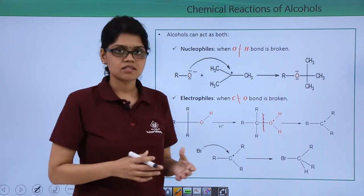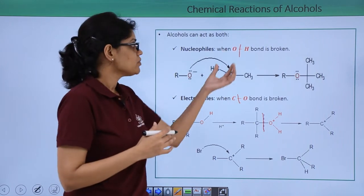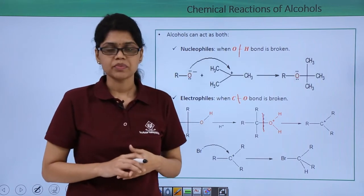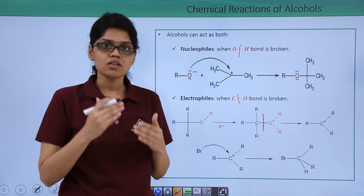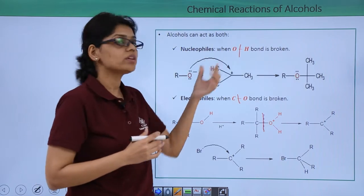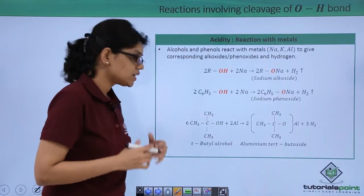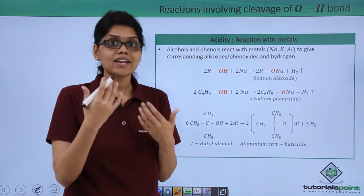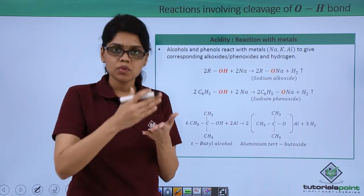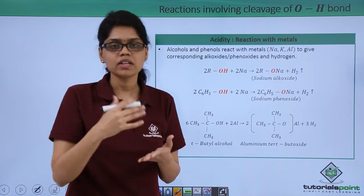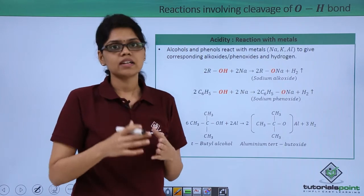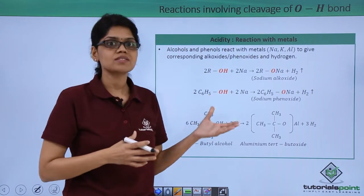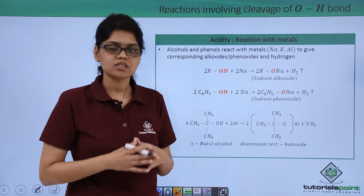These two reactions illustrate how alcohols can act as a nucleophile when the OH bond is broken, and as an electrophile when the CO bond is broken. Now we are going to discuss various reactions that happen when the OH bond is broken. The ease with which an OH bond breaks can also indicate how acidic the given compound is, because when the OH bond breaks, it shows the ease with which a proton can be liberated and reflects the acidic strength of a given molecule. Whether alcohols or phenols are acidic can be established through certain reactions.